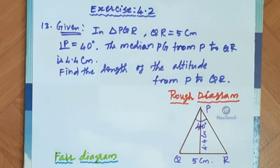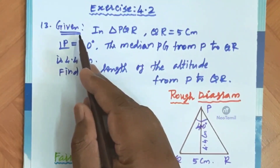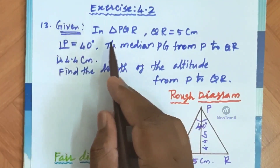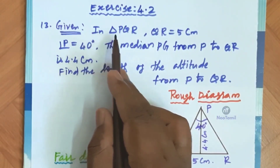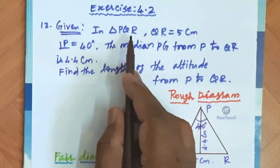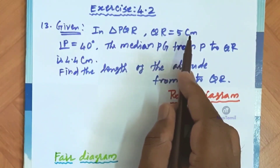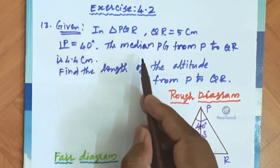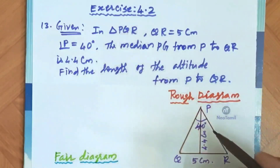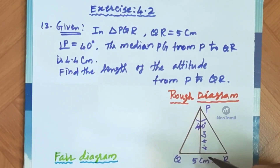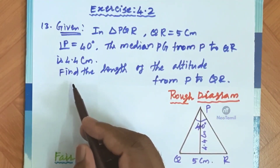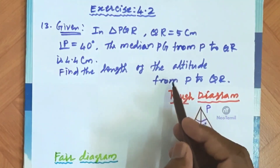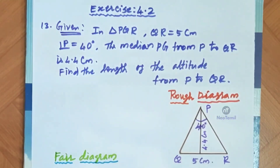In exercise number 4.2, question number 13, the given information is: In triangle PQR, QR is equal to 5 cm and angle P is equal to 40 degrees. The median PG from P to QR is 4.4 cm. Find the length of the altitude from P to QR.